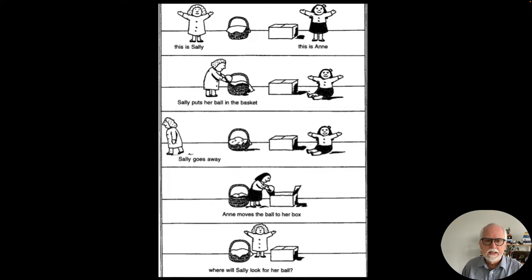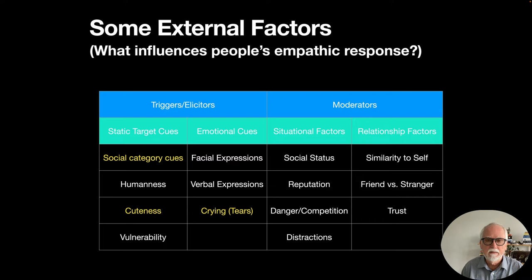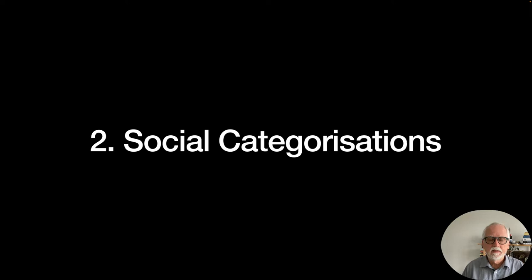Today I want to focus on state empathy — how you feel at the moment in terms of empathy for somebody or some animal that needs help. Some external factors that influence our empathic responses include triggers or elicitors and moderators. These include static target cues, emotional cues, situational factors, and relationship factors. For the rest of this lecture I'll focus on three of these: social category cues, cuteness, and crying and tears.